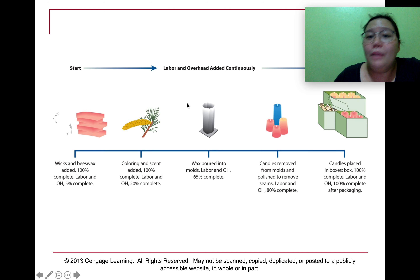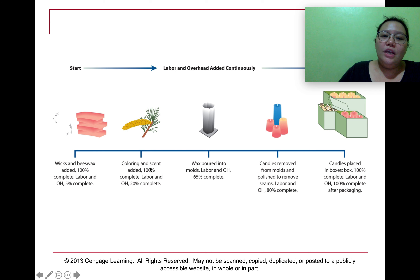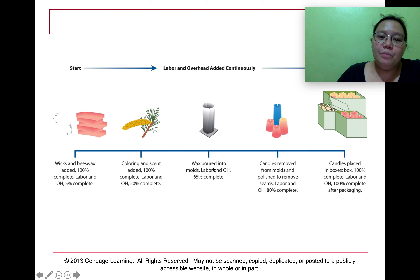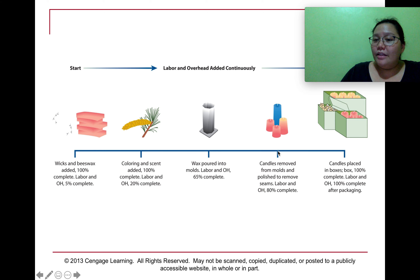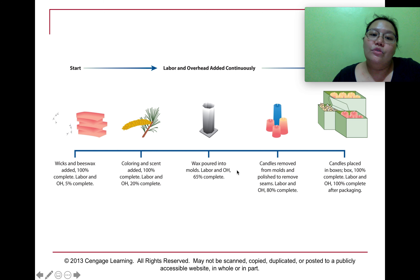For example, in candle production: wicks and beeswax are added and are 100% complete at 5% labor and overhead completion. Coloring and scent are added at 20% completion. Wax is poured into molds at 65% labor and overhead completion. At 80%, candles are removed from molds and polished to remove seams, with labor and overhead also at 80%. Finally, at 100%, candles are placed in boxes, and labor and overhead are also 100% complete.